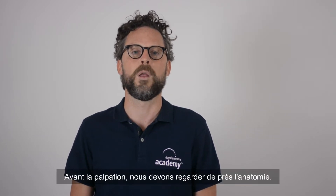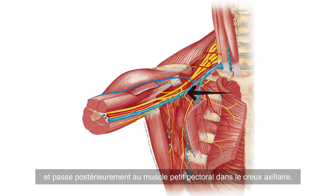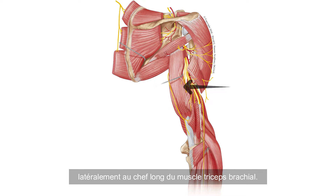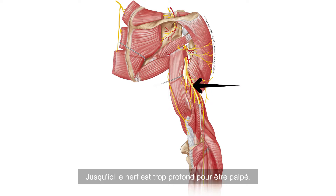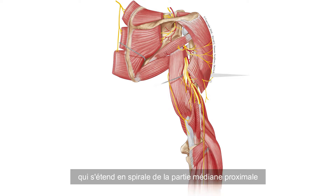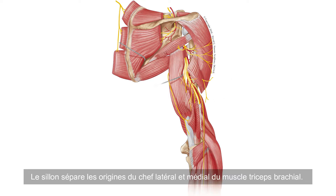Before palpation we have to have a close look at the anatomy. The radial nerve arises from the posterior cord of the brachial plexus and passes posteriorly to the pectoralis minor muscle into the armpit. It reaches the posterior part of the upper arm laterally on the long head of the triceps brachii muscle. Up to here the nerve is too deep to be palpated. The nerve lies within the radial sulcus, also known as the radial groove, which runs in a spiral course from proximal medial to distal lateral around the humerus. The sulcus separates the origins of the lateral and the medial head of the triceps brachii muscle.